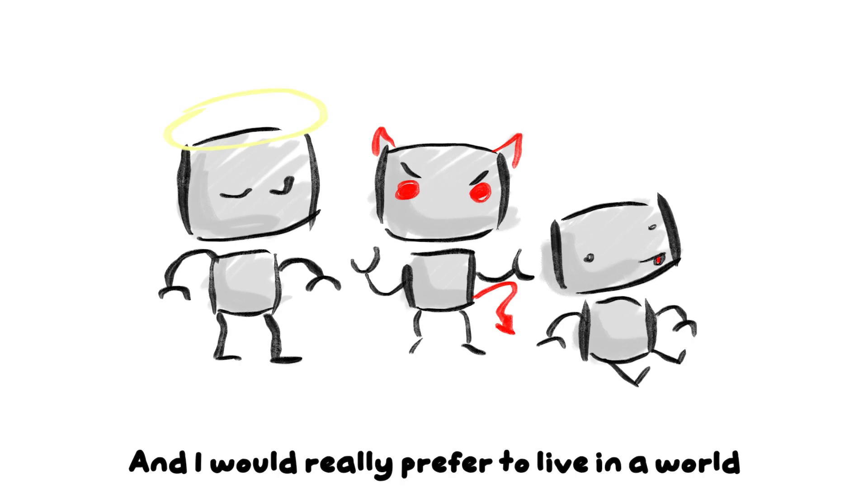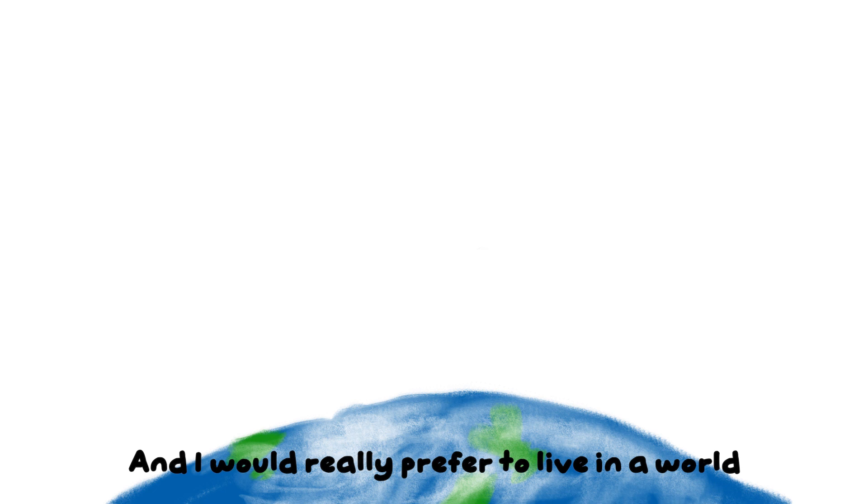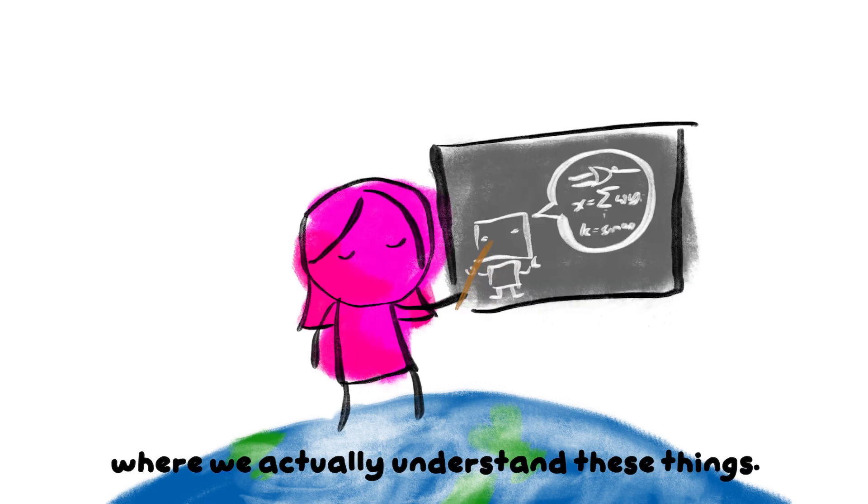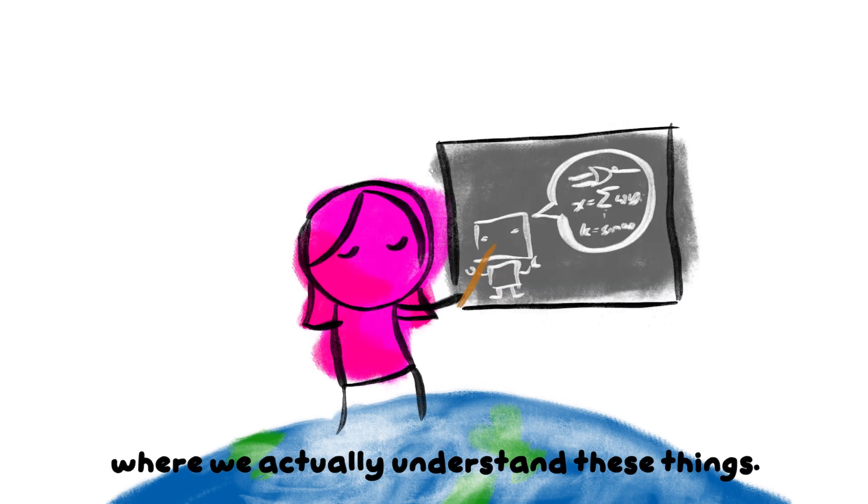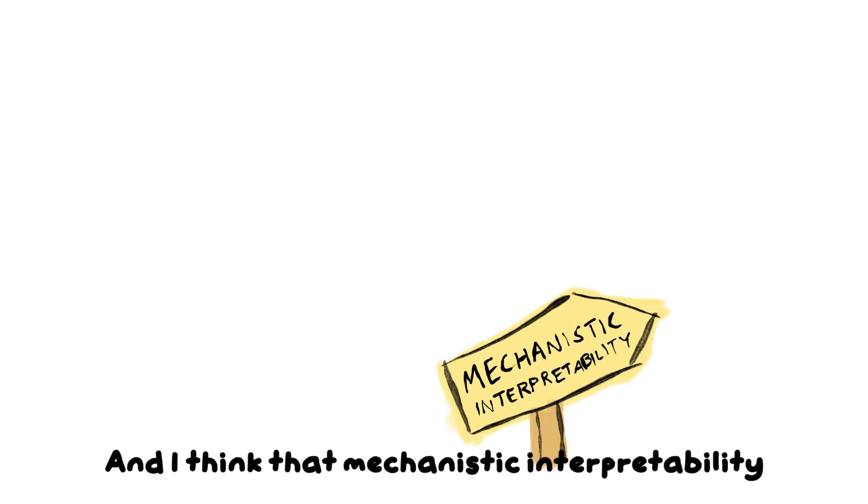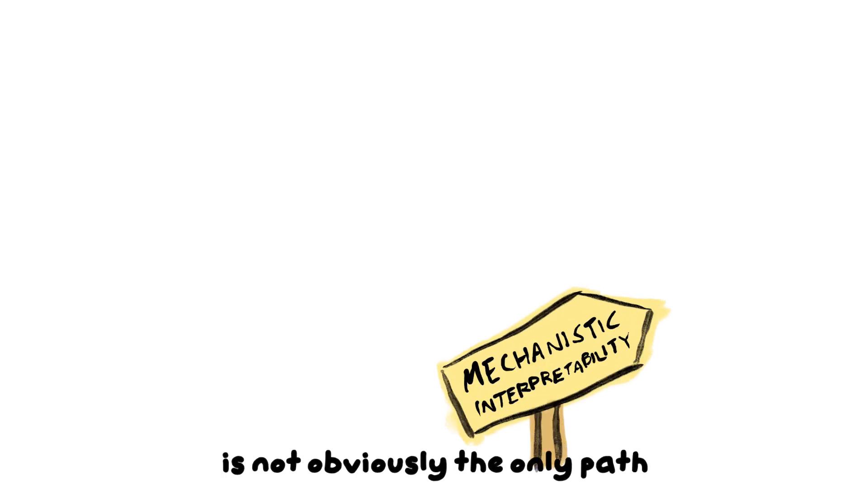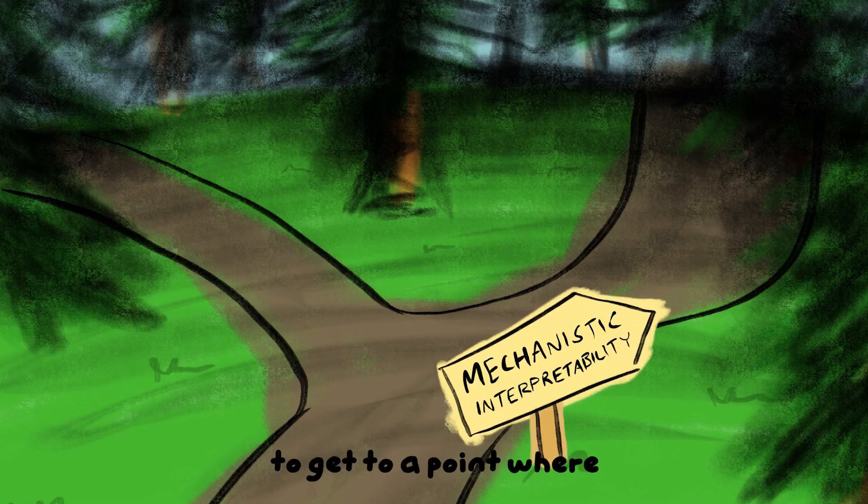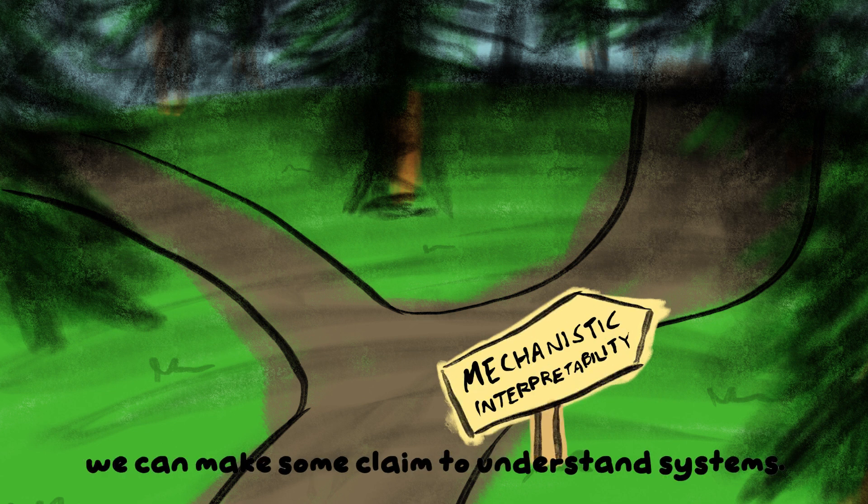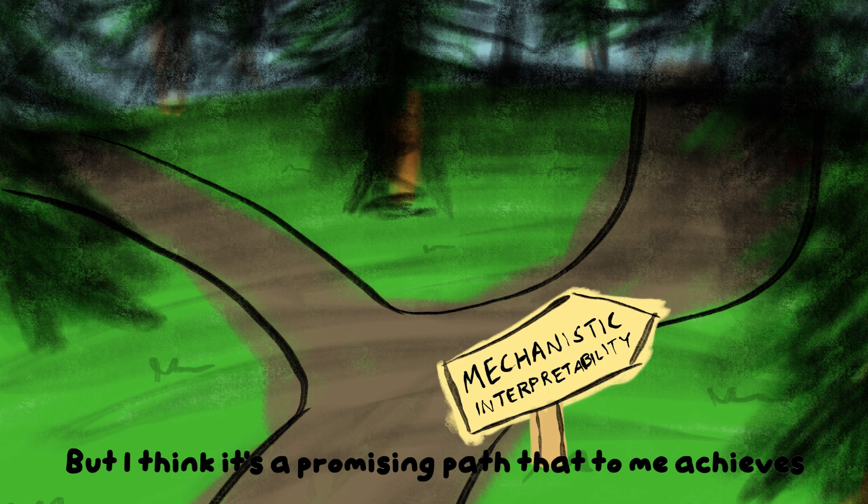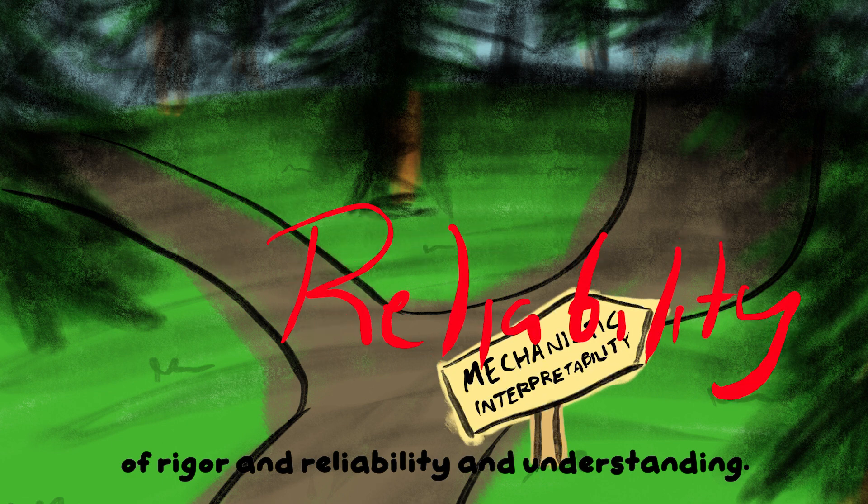I would really prefer to live in a world where we actually understand these things. And I think that mechanistic interpretability is not obviously the only path to get to a point where we can make some claim to understand systems, but I think it's a promising path that achieves a pretty high level of rigor, reliability, and understanding.